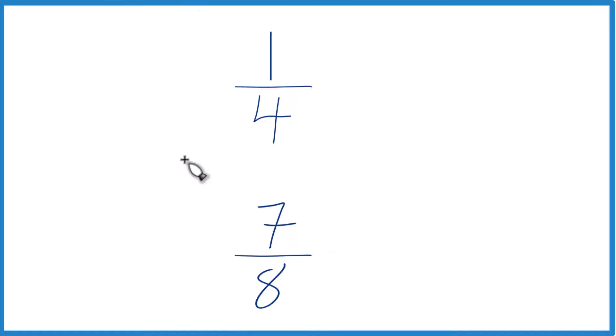You can also kind of look at this, how many times does 1 go into 4? It goes in there 4 times. 7, it goes into 8 one time with a little bit of a remainder. So much larger, 7/8 is much larger.